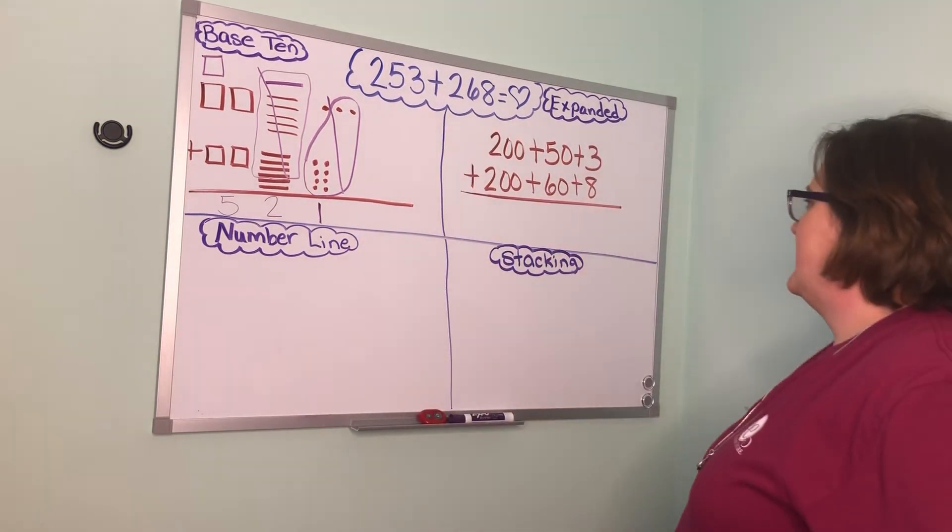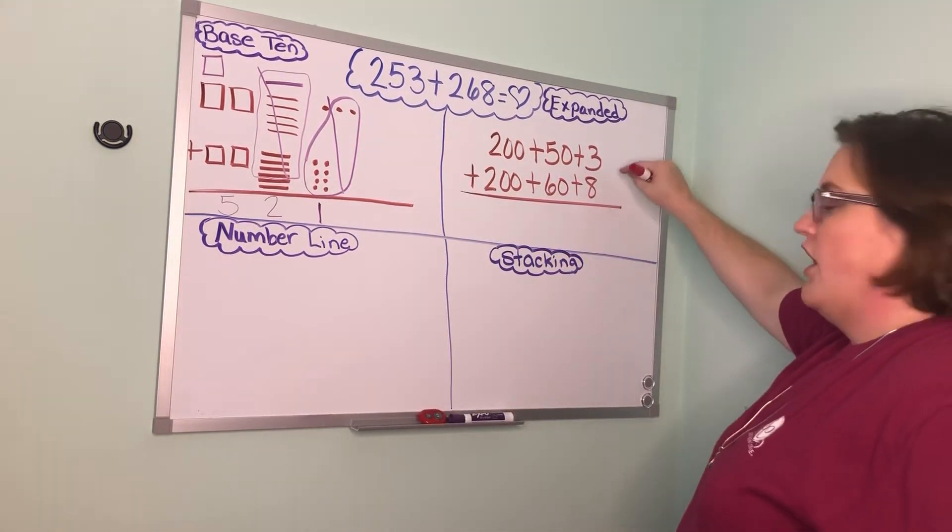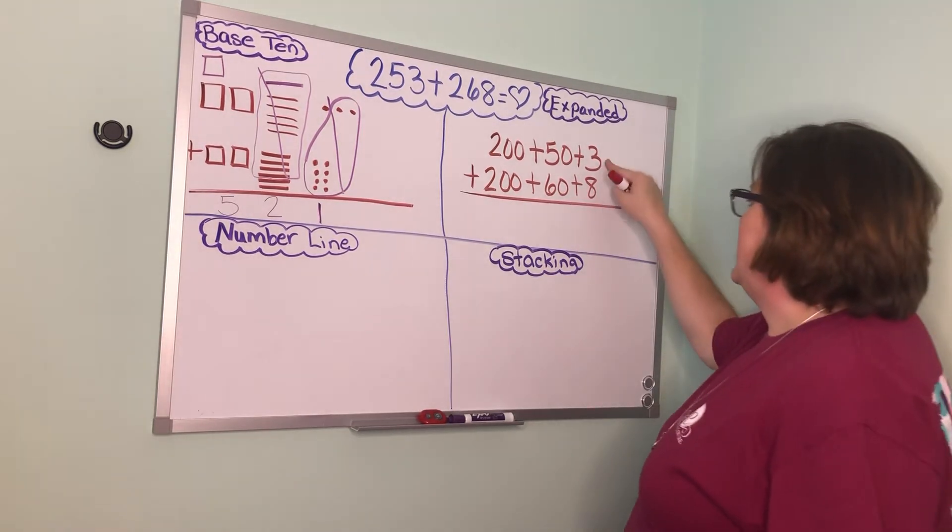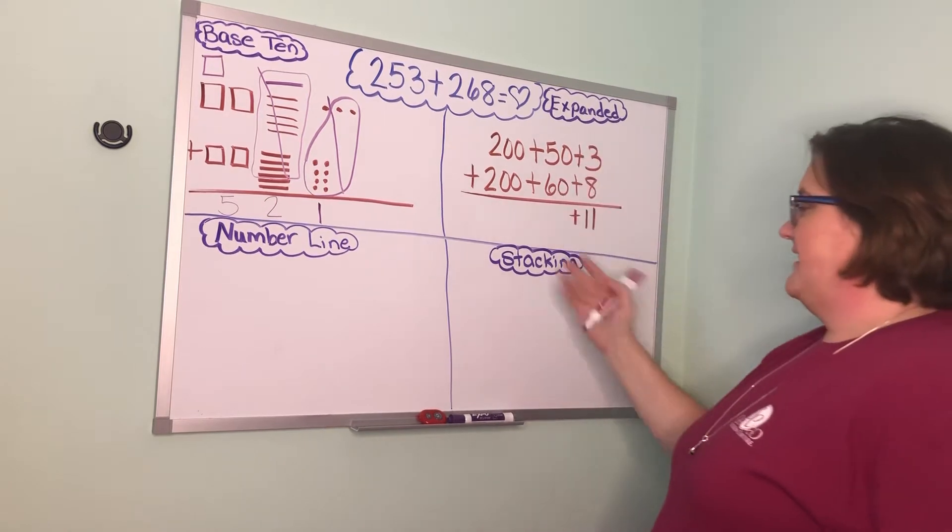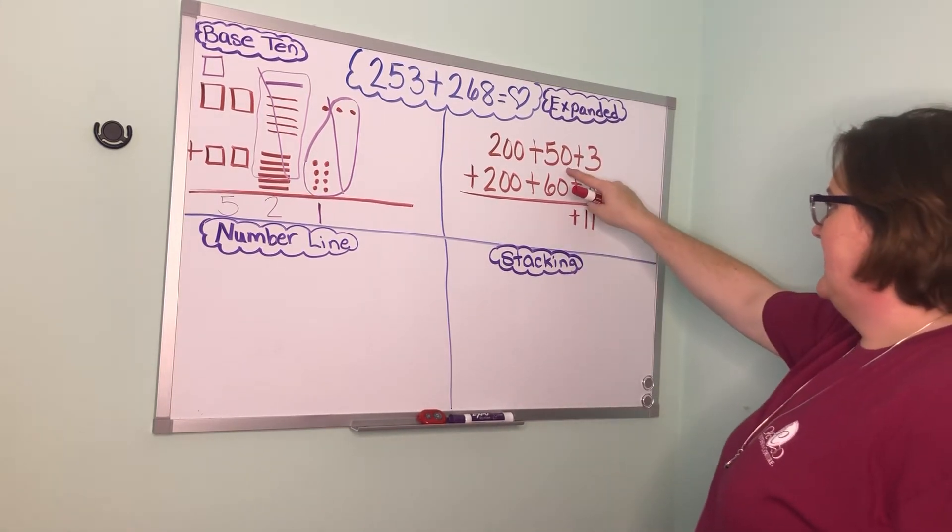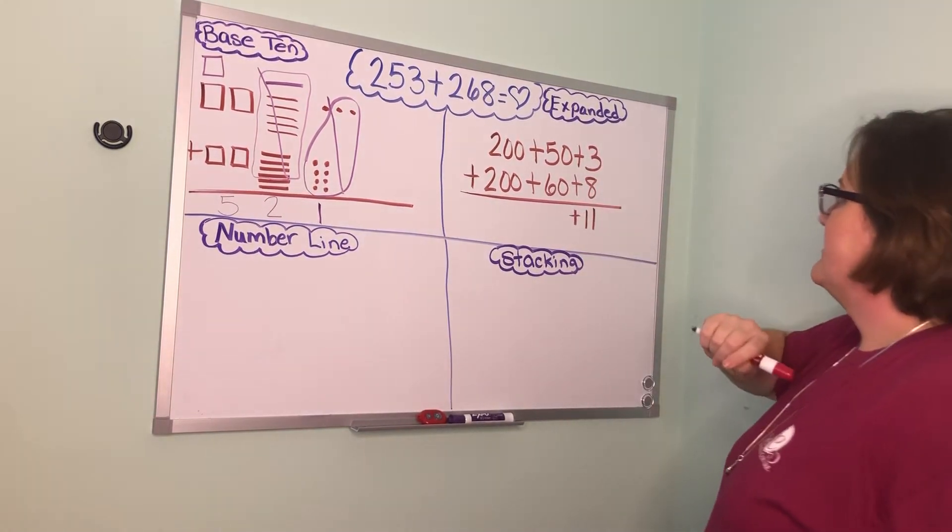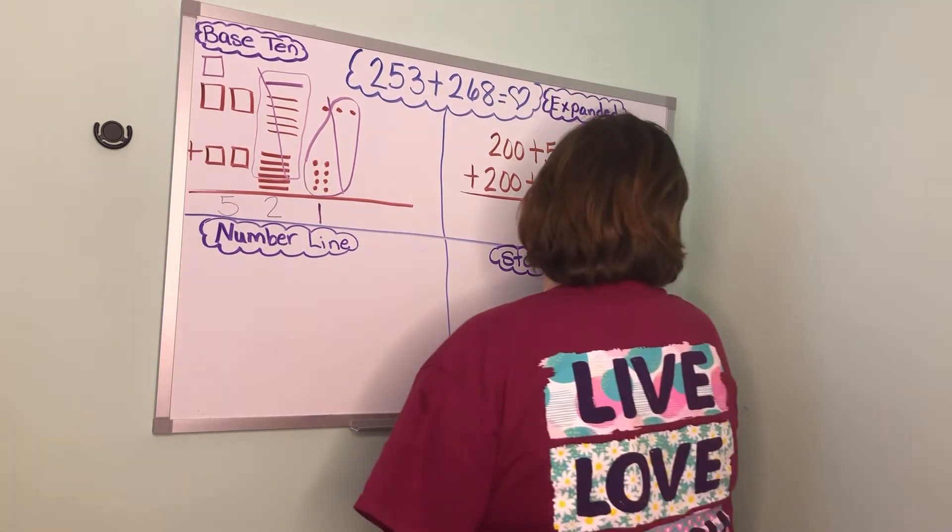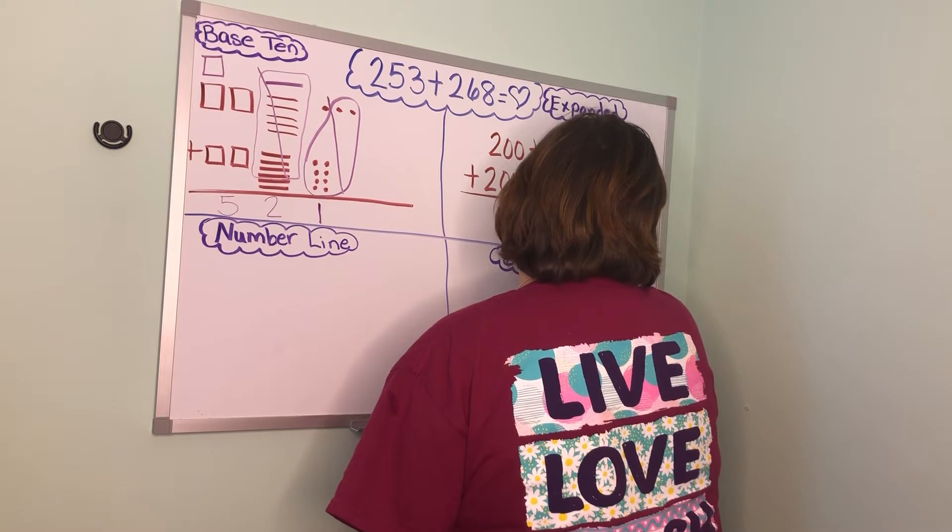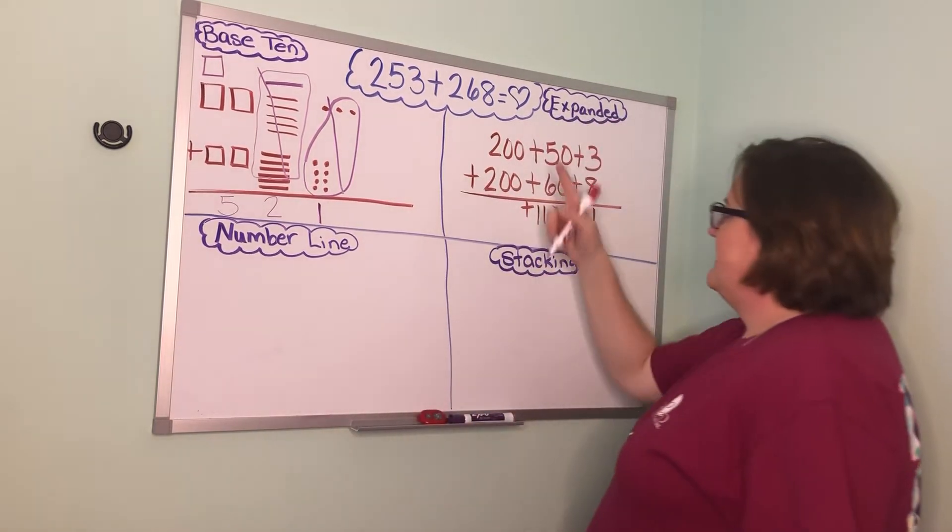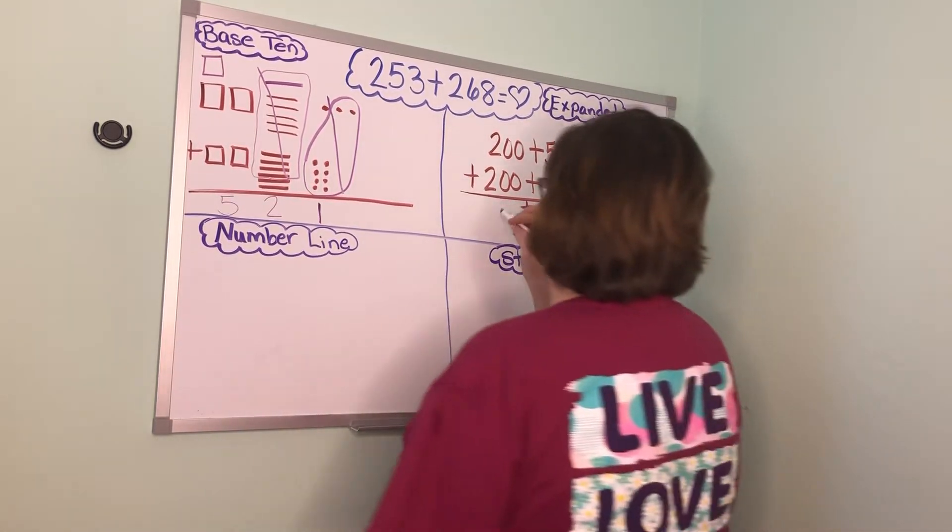Now I'm ready to add up. I always start with my ones. So I have 8 plus 3 which is 11. Put a plus sign. Everything is lined up. I have 50 plus 60. So that gives me 110. And then a plus sign. And then 200 plus 200 is 400.